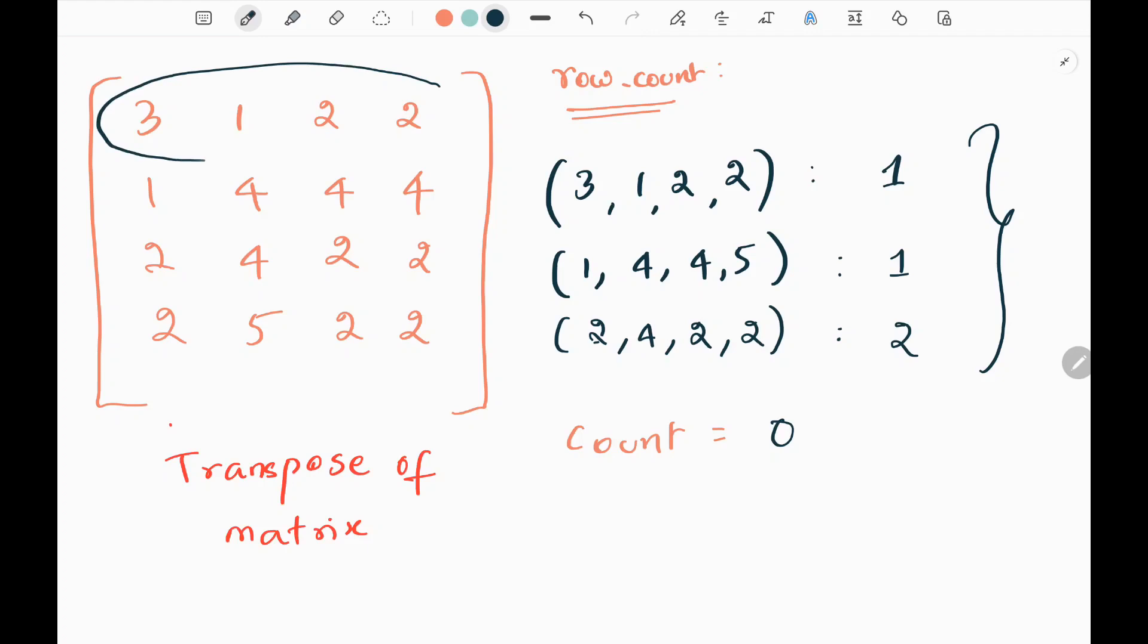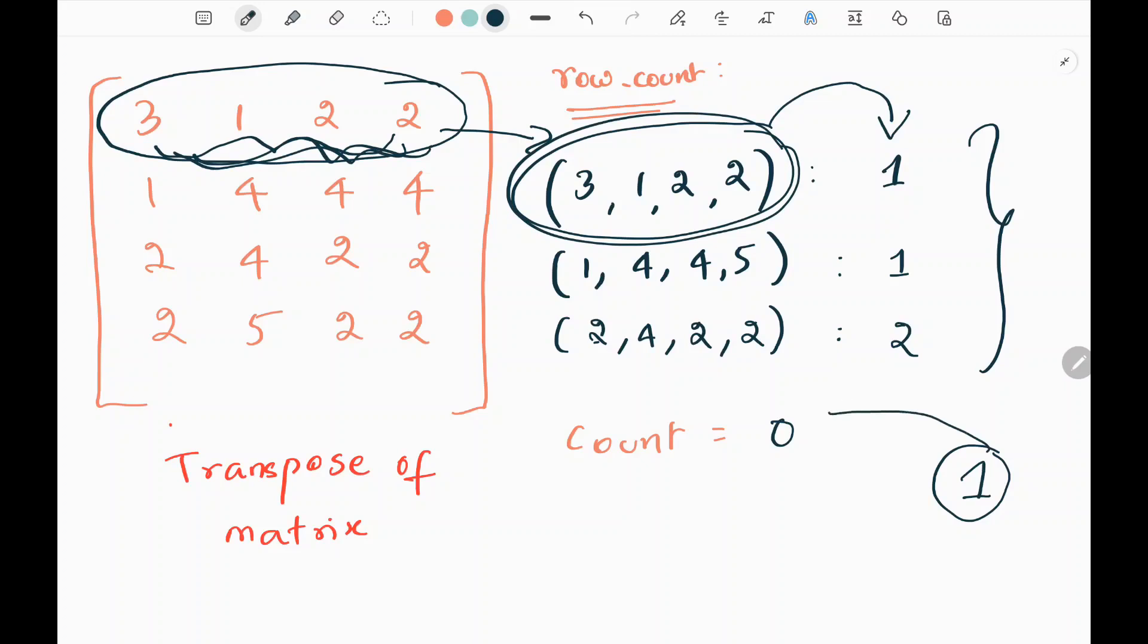So now we need to check whether this row exists in our row count. So basically these are my columns in my original grid. Since we took transpose of the grid, they are appearing in rows. So now we need to check whether we have the same set of values in the row count dictionary or not. So yes, there is the same set of values. So we need to take the value that is 1, which means I can form one pair with the given set of values. So this is column and this is row. So I can form one pair. So we need to add this 1 to the count. So the count becomes 1 now.